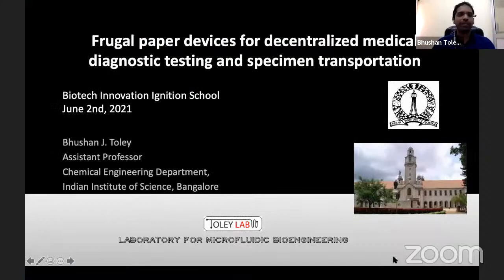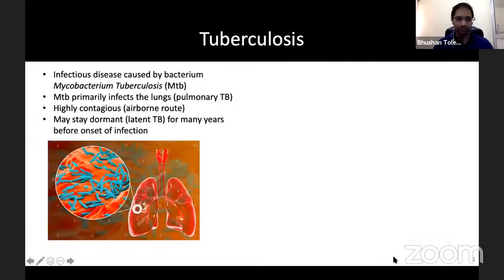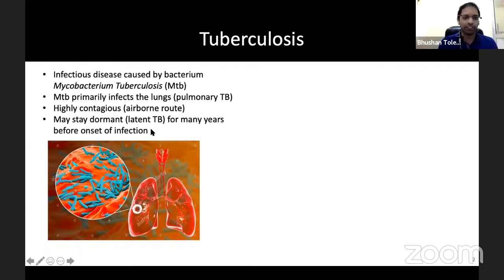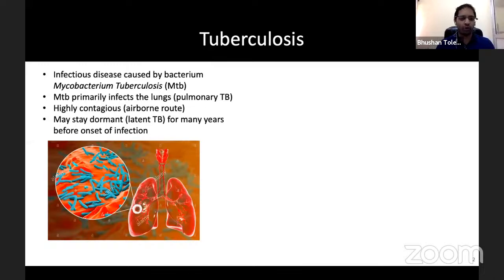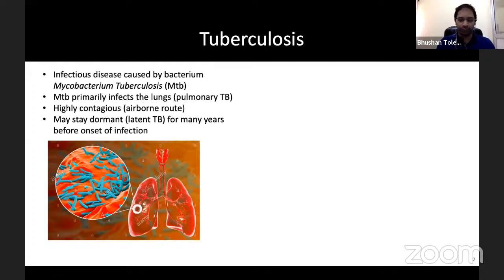I'll quickly start with the introduction of tuberculosis. TB is an infectious disease caused by a bacterium called Mycobacterium tuberculosis, which primarily infects the lungs — called pulmonary TB. It is highly contagious by the airborne route and may stay dormant for many many years before onset of infection. Comparing with COVID: COVID also infects the lungs but there's no dormant phase — it either infects you or the immune system takes care of it, and the progression is much faster than TB.